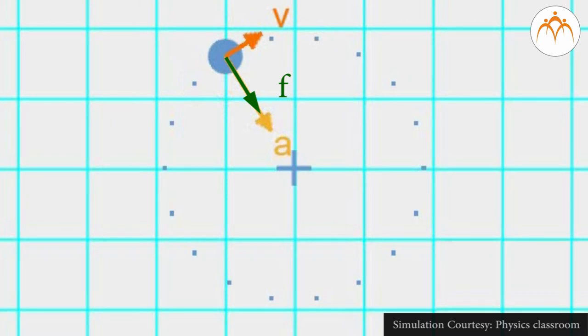The net force acting upon such an object is directed towards the center of the circle. The net force is said to be an inward or centripetal force. Without such an inward force, an object would continue in a straight line, never deviating from its direction.